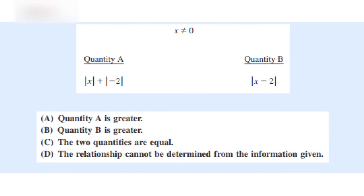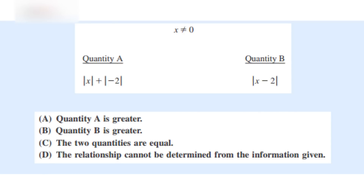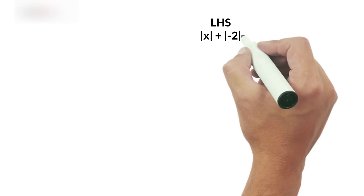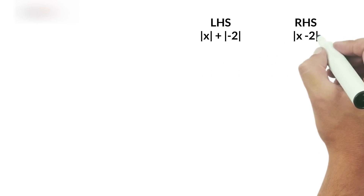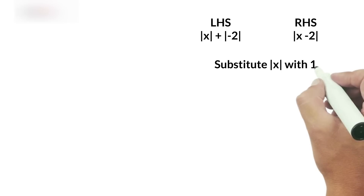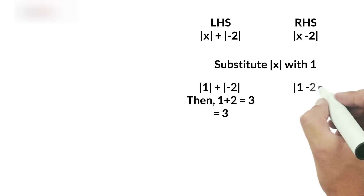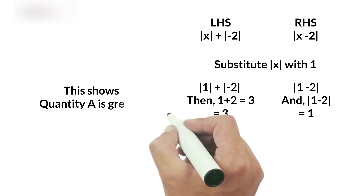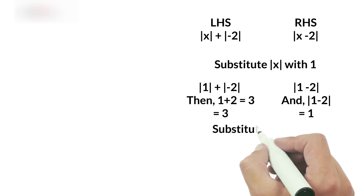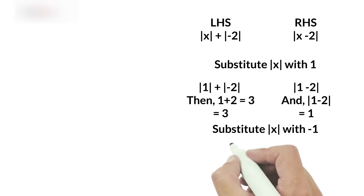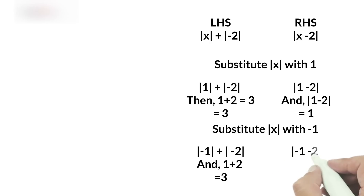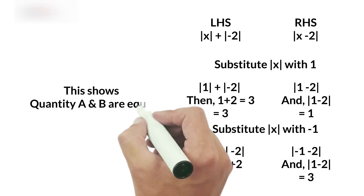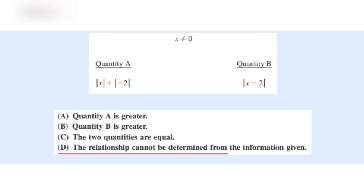Since x cannot be zero, x has to be a positive or negative number. We know mod of minus 2 equals 2, so we're comparing mod of x plus 2 with mod of x minus 2. If we substitute mod of x with 1, the left-hand side equals 1 plus 2 equals 3, and the right-hand side 1 minus 2 equals 1. But before you mark option A, try a negative value. Substituting mod of x with minus 1, the left-hand side becomes mod of minus 1 plus mod of minus 2, and the right-hand side equals mod of minus 1 minus 2, which equals 3. So the answer cannot be determined from the given data — the right answer is actually option D.